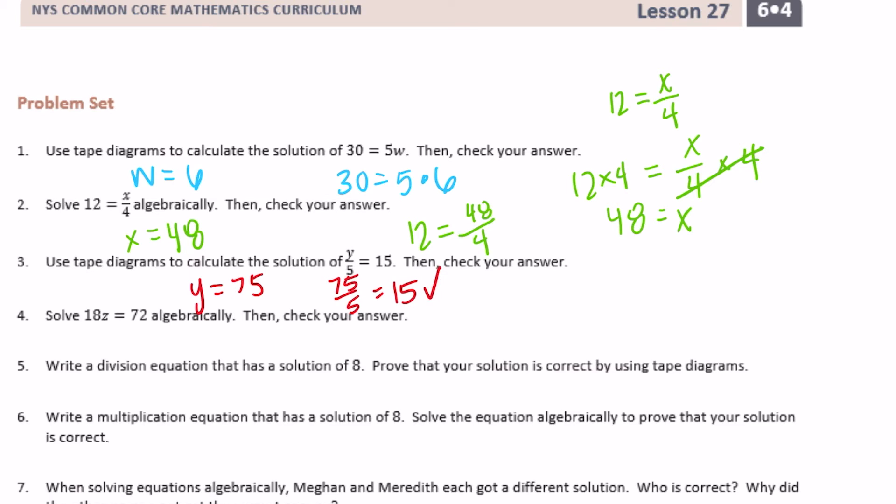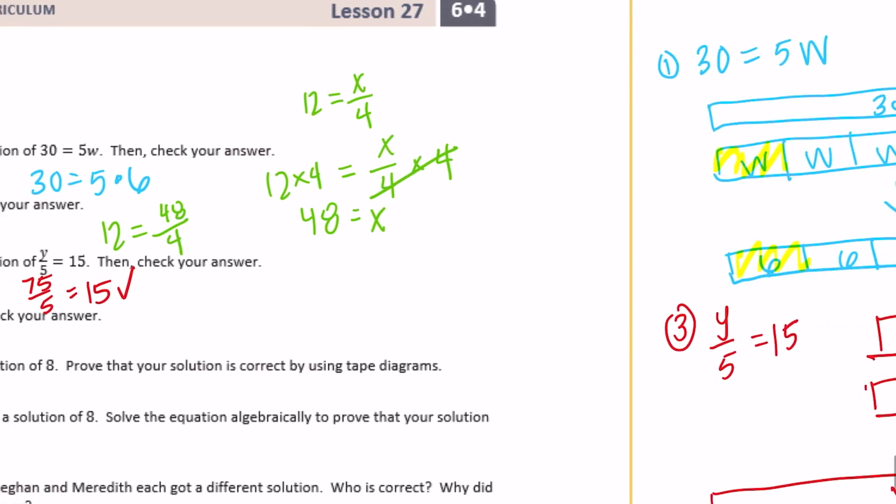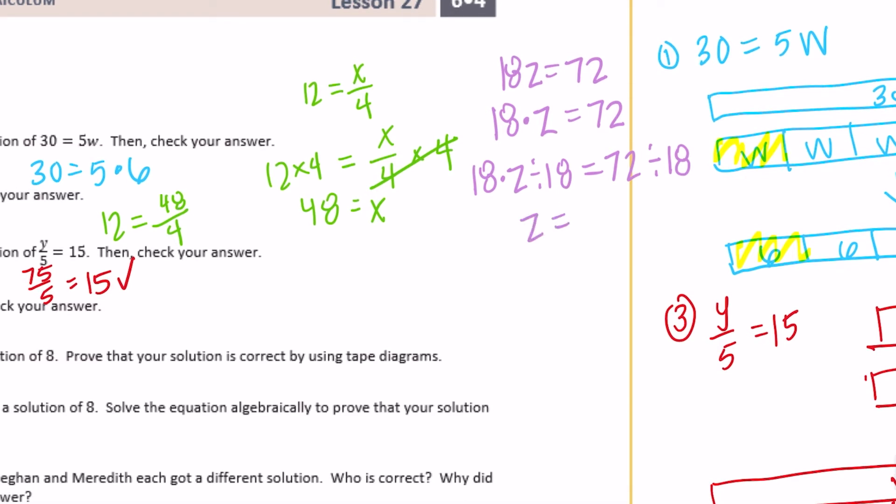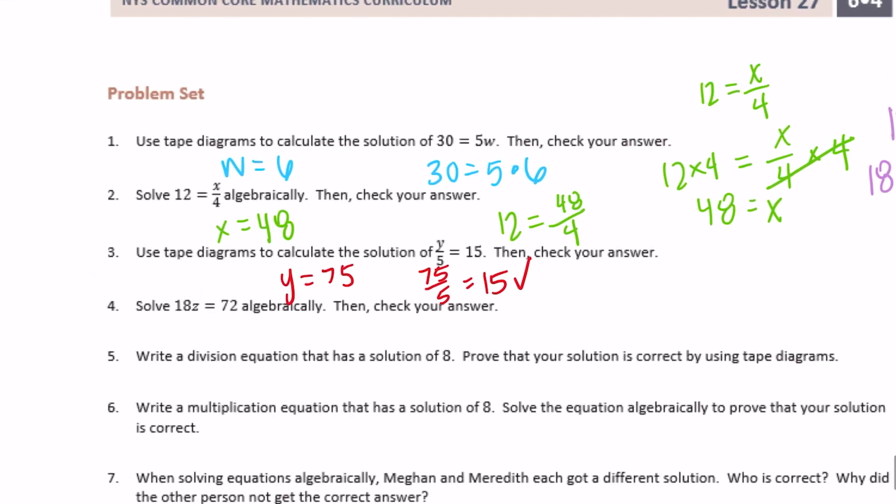Number 4, solve 18z equals 72 algebraically, then check your answer. So 18z equals 72. So this is basically saying 18 times z equals 72. So what I need to do here is, since we're doing 18 times z, I need to counteract that by dividing by 18 so that we can get z by itself. But what we do to that side, we need to do the other side. So 72 divided by 18. So we'll just have z is equal to 72 divided by 18, which is 4. So z is equal to 4.